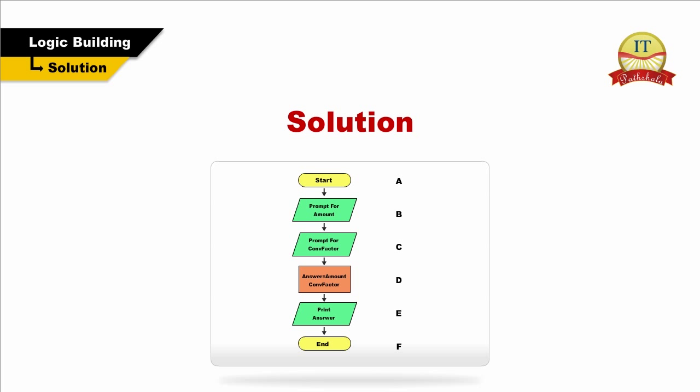Symbol C represents another parallelogram, used this time to input the conversion factor used to convert dollars into the currency of the customer. Symbol D represents a rectangle, used to document the calculation step which will take the amount and multiply it by the currency factor. Symbol E represents a parallelogram again, this time to display output on the screen in the form of a reported message showing the results of the calculation done in the previous step. Symbol F represents another terminator symbol, used to indicate the end of the logic.